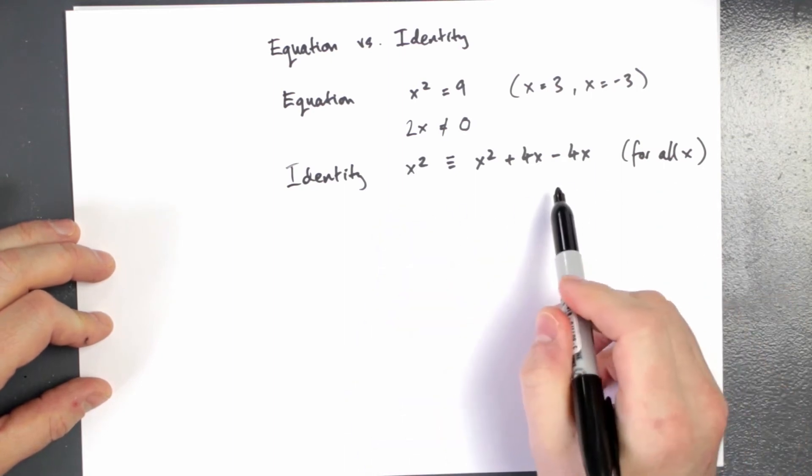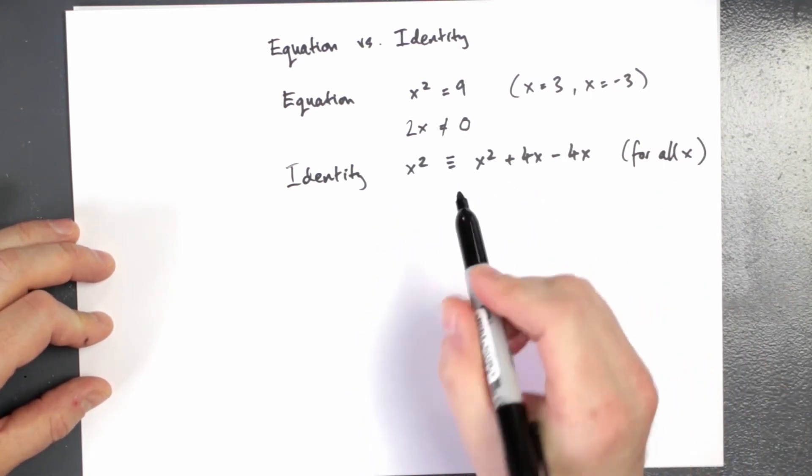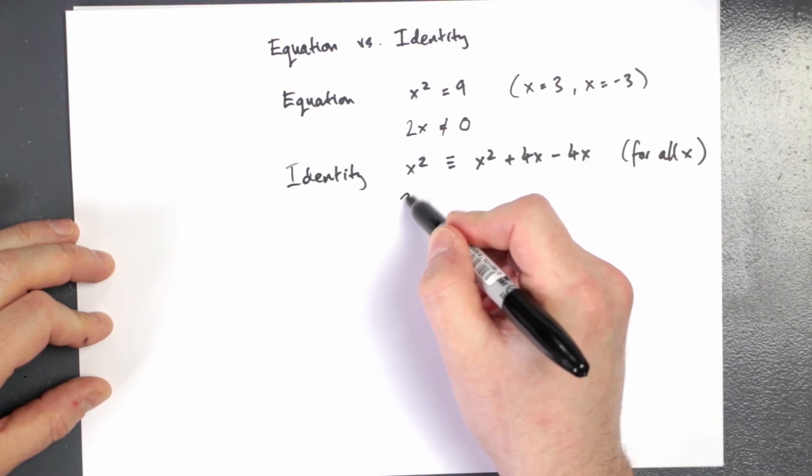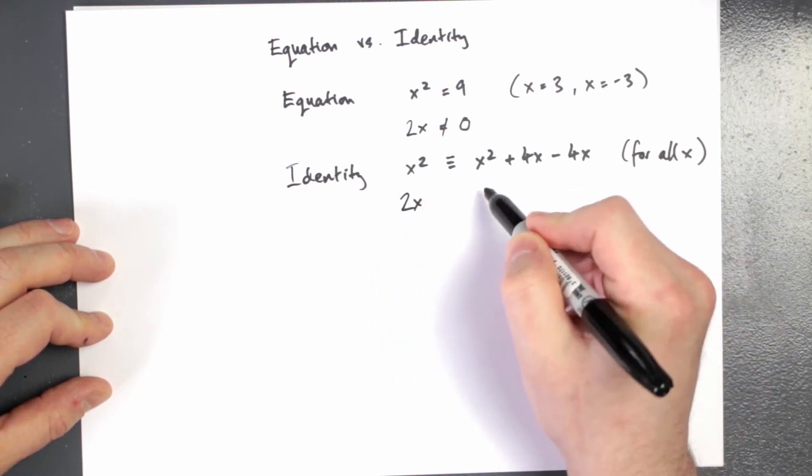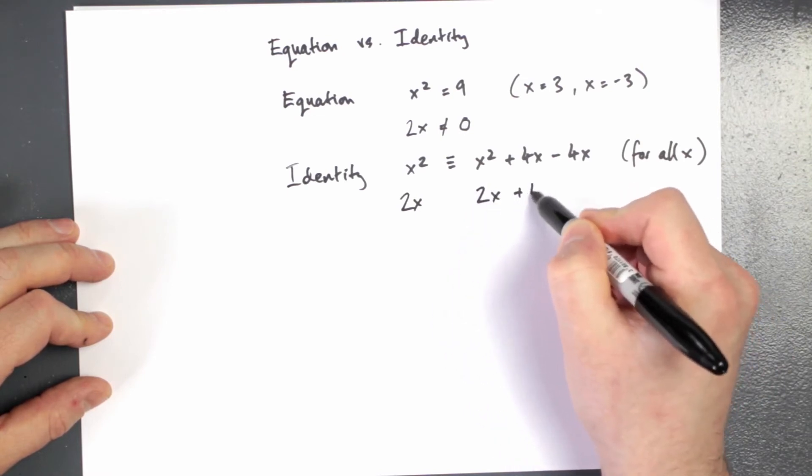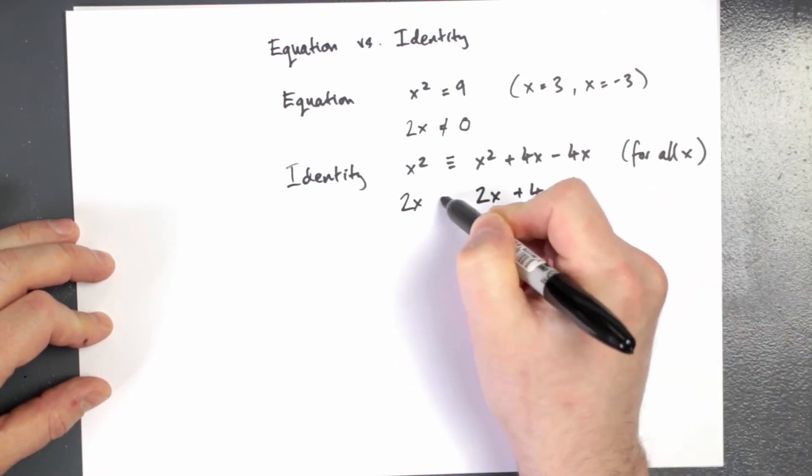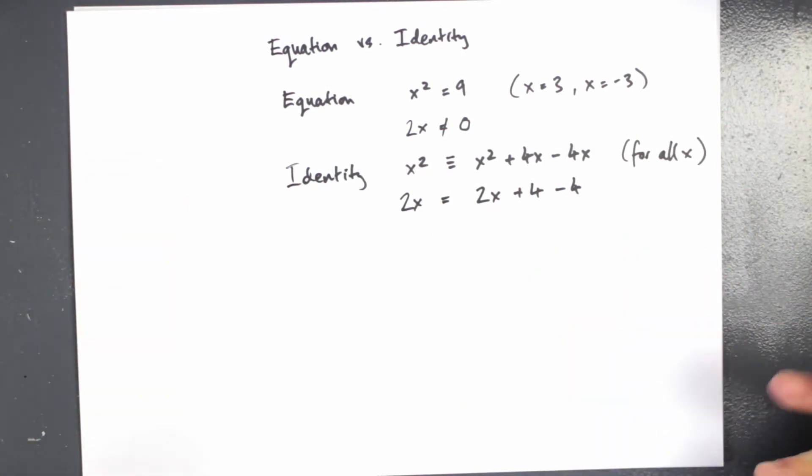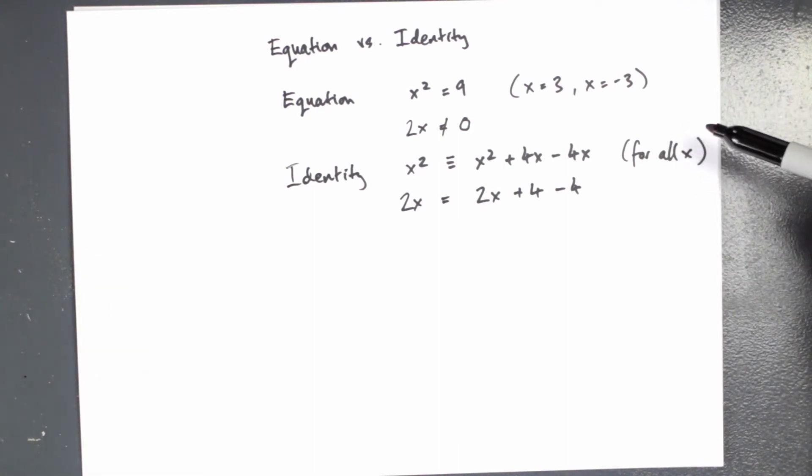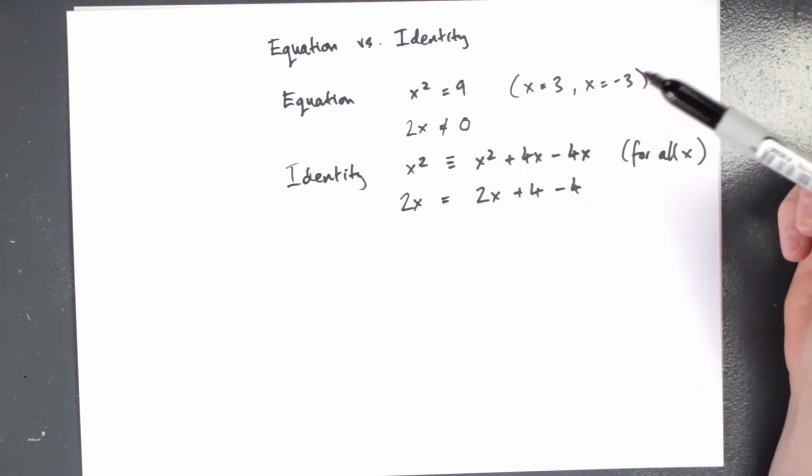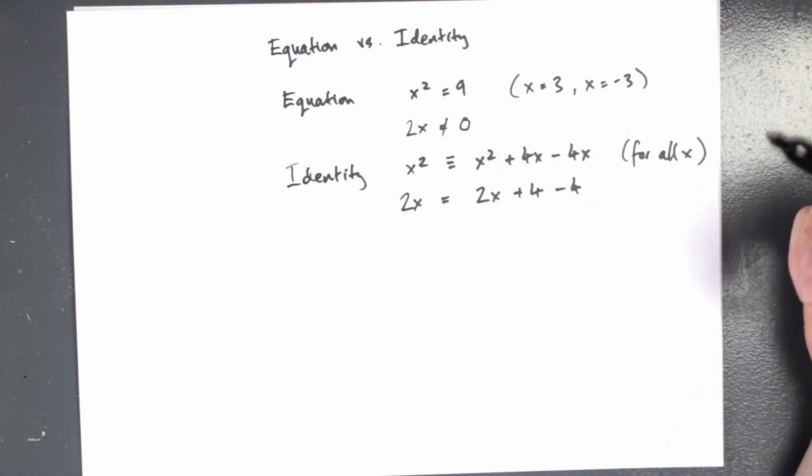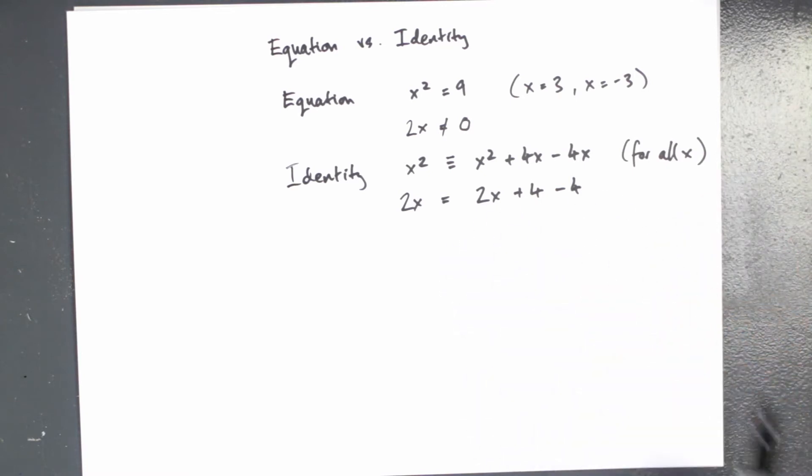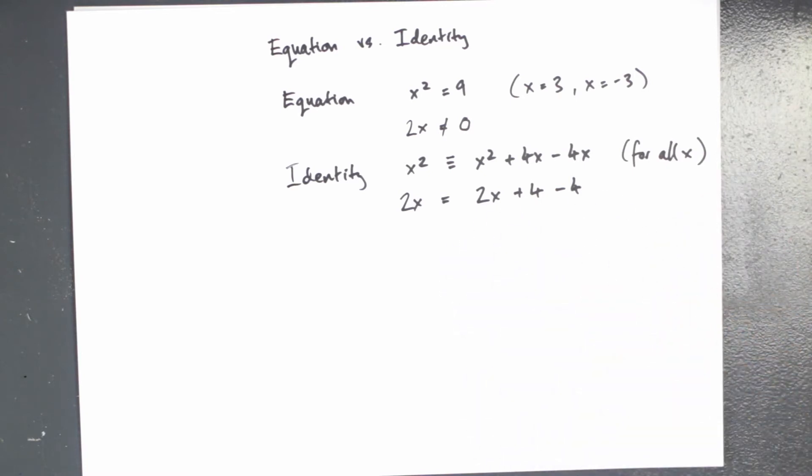And now if we have an identity, let's try differentiating both sides of this. If I differentiate x squared, I get 2x. And if I differentiate this side with respect to x, I get 2x plus 4 minus 4. And these are still equal to each other. So that's the message in brief: if we have an equation, something that's true for some specific x, you can't just differentiate both sides of an equation. If you have an identity, it holds for all values of x. Then we can differentiate both sides of an identity.